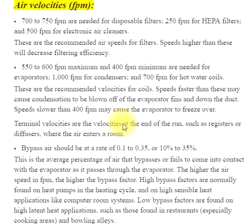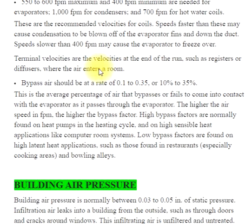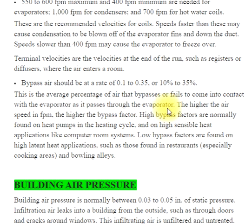Terminal velocities are the velocities at the end of the run, such as registers or diffusers, where the air enters a room. Bypass air should be at a rate of 0.1 to 0.35, or 10% to 35%. This is the average percentage of air that bypasses or fails to come into contact with the evaporator as it passes through. The higher the airspeed in FPM, the higher the bypass factor.